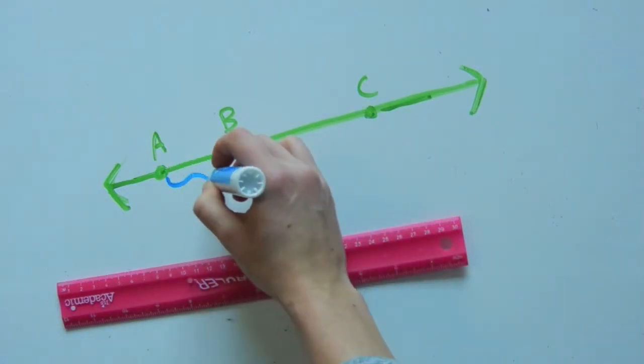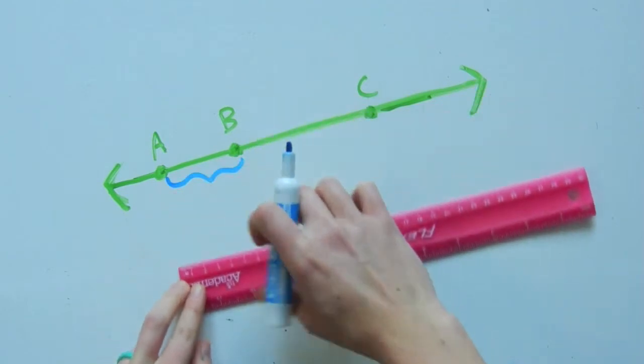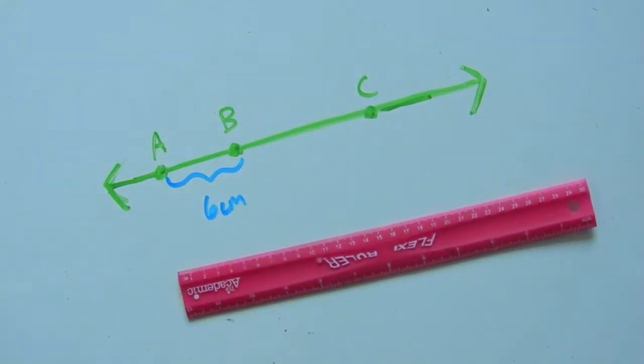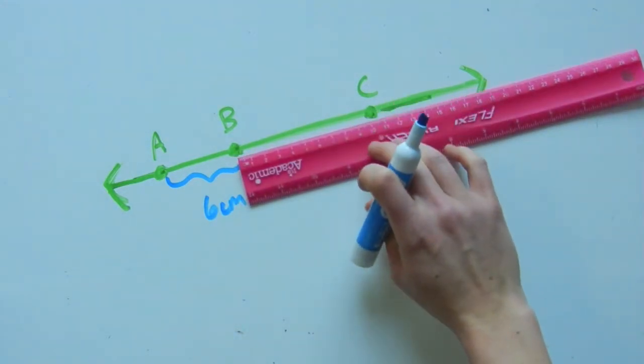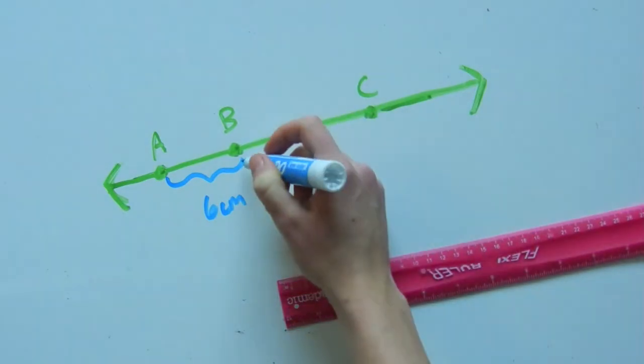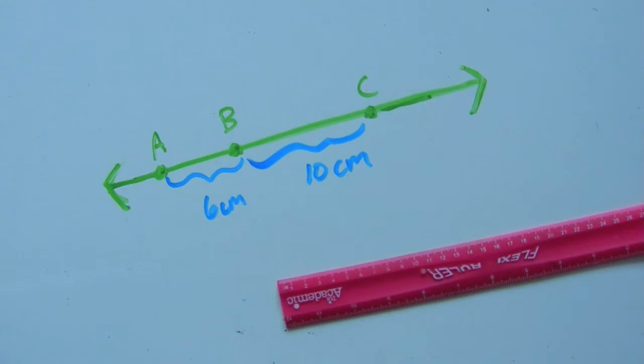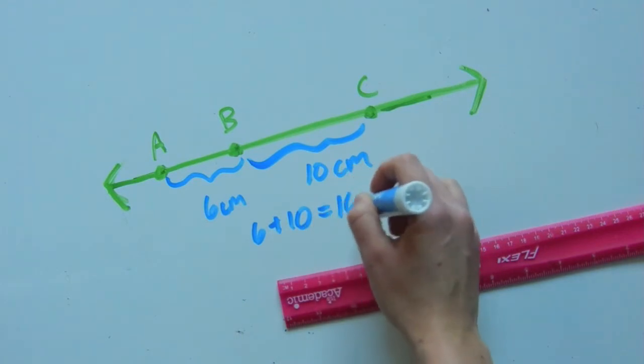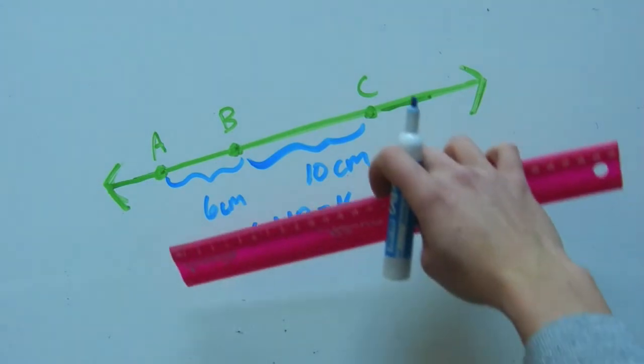So the segment AB measures to be 6 centimeters. The segment from B to C measures to be 10 centimeters. So with that, 6 plus 10 equals 16. So the length from A to C should be 16 centimeters.